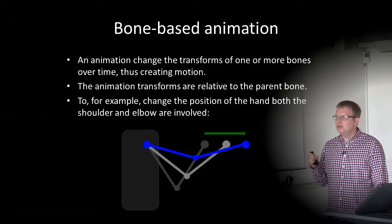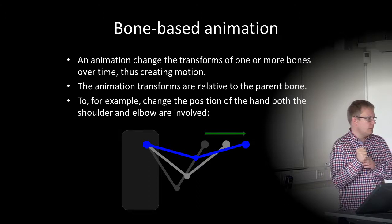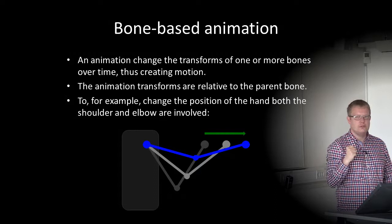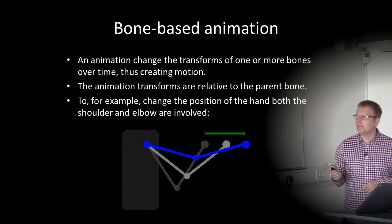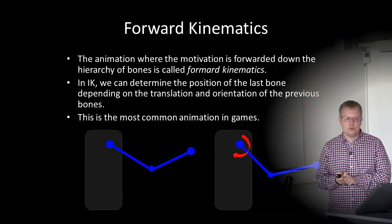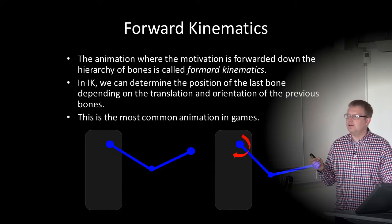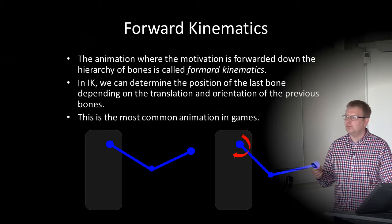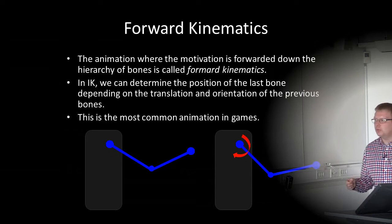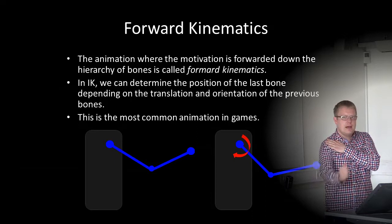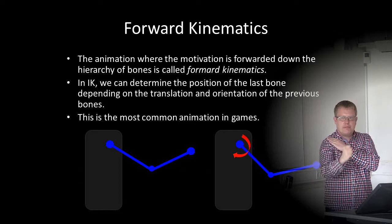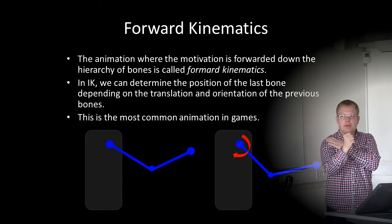To change the position of a hand, both the shoulder and the elbow are involved — two joints and two bones are involved if we move the hand. We have two types of animation. When movement is forwarded down the hierarchy of bones, it's called forward kinematics. In inverse kinematics, we can determine the position of the last bone depending on the translation and orientation of the previous bones.